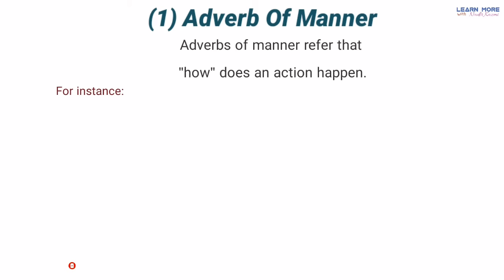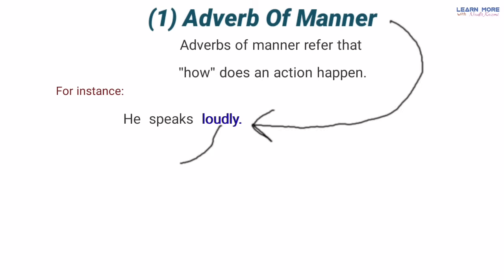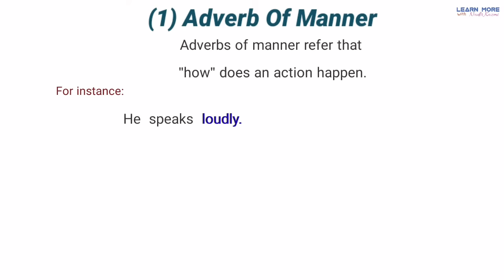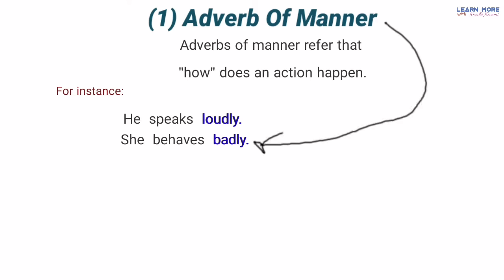For example: 'How does he speak?' — woh kis tarah bolta hai? 'He speaks loudly' — woh tez bolta hai. Ab yahan par jo word 'loudly' hai yeh ek adverb of manner hai kyunke yeh uske andaaz ke baare mein bata raha hai ke yeh jo kaam karta hai yani bolne ka woh kis tarah karta hai — loudly, tez. 'How does she behave?' — woh kis tarah bartao karti hai? 'She behaves badly' — woh buri tarah bartao karti hai. Ab jo word 'badly' hai yeh bhi ek adverb of manner hai kyunke yeh uske andaaz ke baare mein bata raha hai ke woh kaise bartao karti hai — badly, buri tarah.